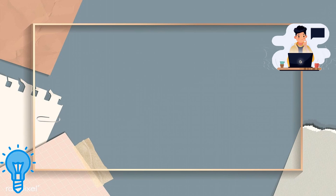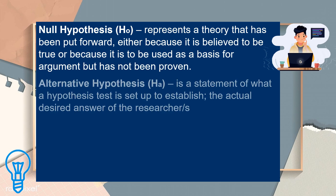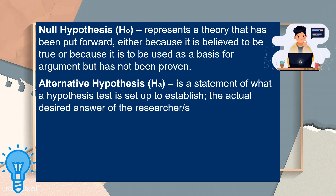Let's have the types of hypotheses. The first one is the null hypothesis, or H sub-zero. It represents a theory that has been put forward either because it is believed to be true or because it is to be used as a basis for argument, but has not been proven. Second is the alternative hypothesis, or H sub-A. It is a statement of what a hypothesis test is set up to establish — the opposite of the null hypothesis, and can only be reached once the null hypothesis is rejected. Mostly, the alternative hypothesis is the actual desired answer of the researcher.